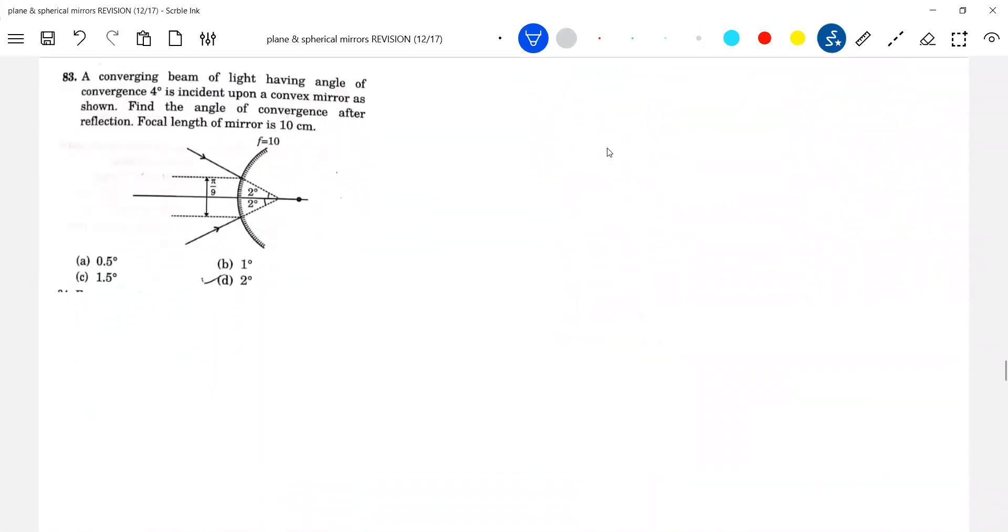I think I already discussed this in class. Once again, let me put it because usually we do many problems where the object is at some distance. But here, what happened? We have the rays incident. The incident rays will subtend an angle with the principal axis here, that is phi two degrees. Find the angle of convergence after reflection. This is very widely used in some instruments.